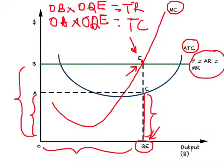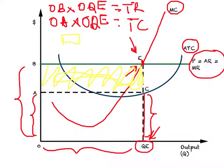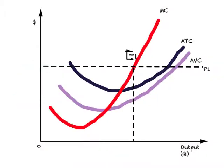The difference between total revenue and total cost gives us total profits. Total profits are represented by the area of the rectangle A, B, E, C. So we can determine the equilibrium level of output and figure out total profits made by the firm using this diagram.